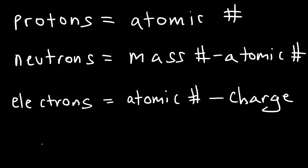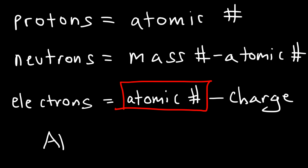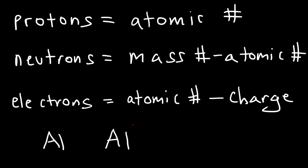For an atom like aluminum, which doesn't have a charge, the charge is zero, so the electrons will be equal to the atomic number. For an atom, the number of electrons and protons are the same because the atom is neutral. But if we have an ion — say a positively charged cation — then the number of electrons will change; there will be more protons than electrons. Or if we have an anion like the phosphide anion, there will be three more electrons than protons. For ions, the number of electrons and protons are different, but for electrically neutral atoms, they are the same.